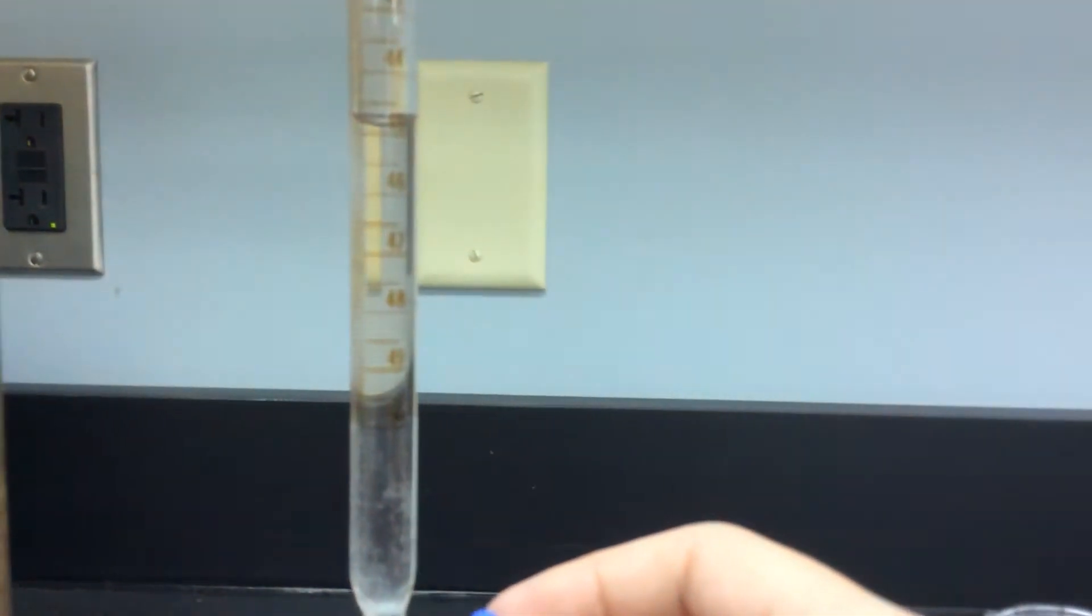Because remember, a burette goes from 50 up to zero, and it works by subtraction. So when I'm dispensing, I want to watch my level. I've got about five more milliliters to go.